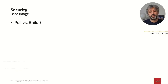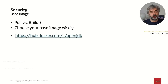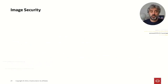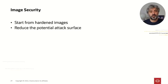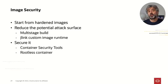Regarding base image security, there's always the pull versus build question — I prefer to build my image from scratch, but choose your base image wisely. Always start from a hardened image, reduce the potential attack surface using multi-stage builds and J-Link, use security scanner tools, and make sure to secure it. Since JDK 15, we support rootless containers and cgroups v2 in the JVM. And of course, apply common sense.